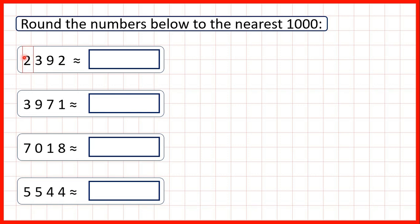What I like to do is highlight or circle the place value that we're rounding to, and then underline the digit to the right. Because we're rounding to the nearest thousand, we underline our hundreds digit. Now remember, with rounding, if it's four or less, we round down. Here, because we have a three in the hundreds, we're rounding our thousands down. When we round down, the digit in the thousands stays the same — so this two is going to stay a two — and all other digits turn into zeros, so we get 2,000.